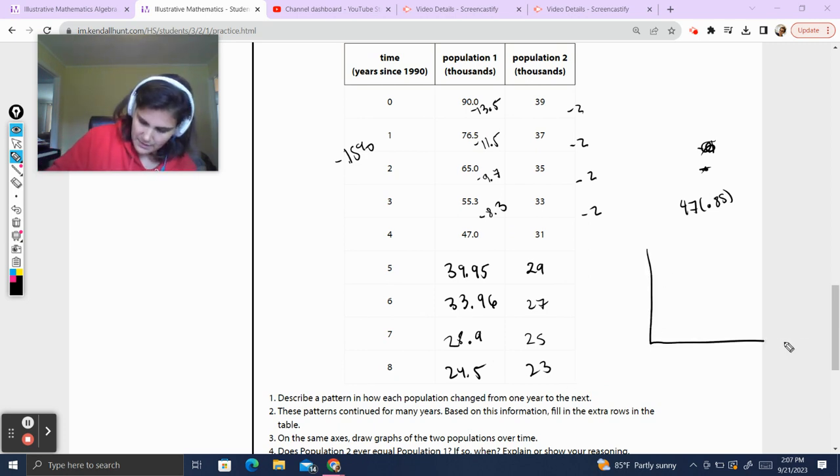So on the same axis, draw the graphs of the two populations over time. So we have 0, 1, 2, 3, 4, 5, 6, 7, 8. Draw the little dashes. The highest we go is 90. So let's count by 10s: 10, 20, 30, 40, 50, 60, 70, 80, 90.